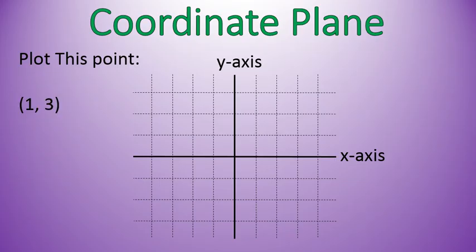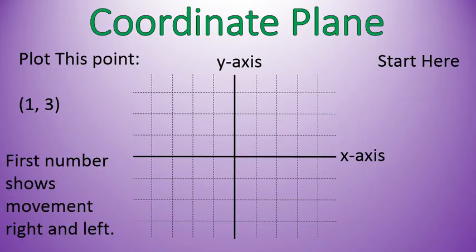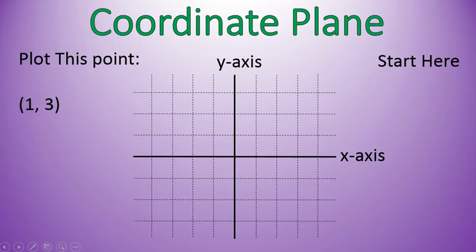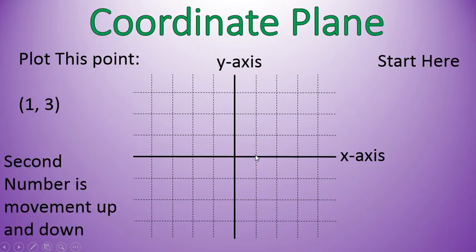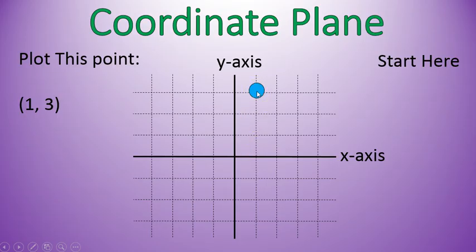Here's a number. It says plot this point: 1, 3. So we start here at the origin, and our first number shows us movement from right to left. We'll move one space to the right — that's our first number. Our second number is the movement up or down, so we would go 1, 2, 3. And our point would be right there. That's the point 1, 3. That's how we plot points on a plane, and that blue dot represents the point 1, 3.